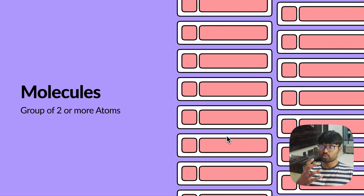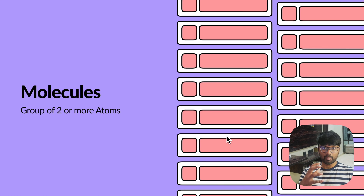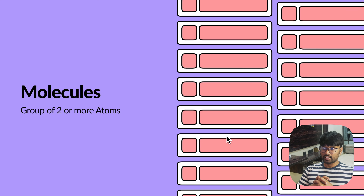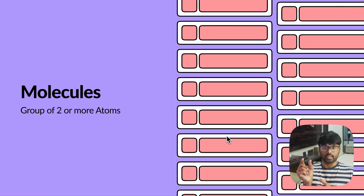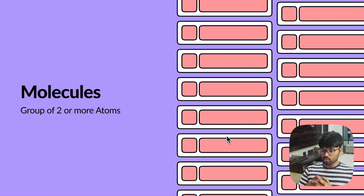Molecules are built with two or more atoms. If you consider a search bar, it contains an input field and a search button. Combining those two atoms together creates a molecule.